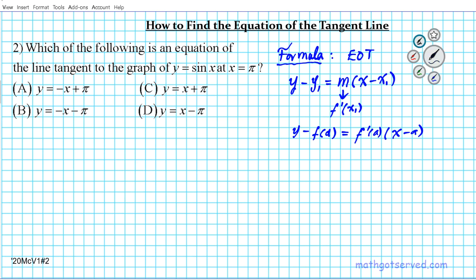Let's write down what we know and what we need to find in this particular problem. We are asked to find the equation of the tangent line of Y equals sine X at X equals pi. We know what X1 is - X1 is pi.